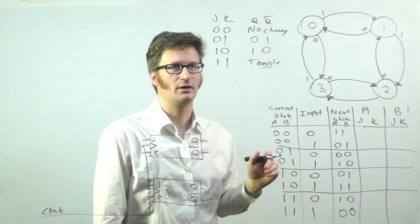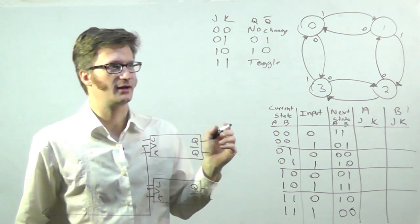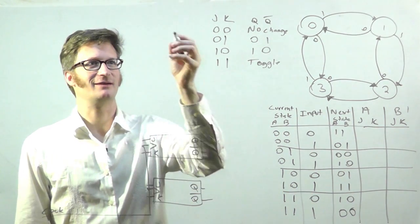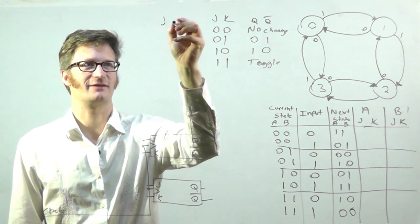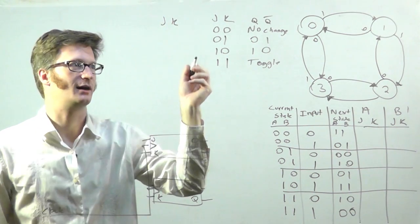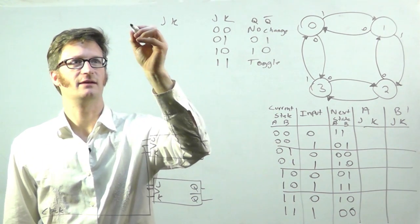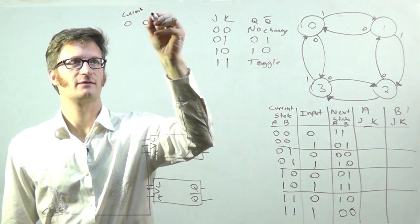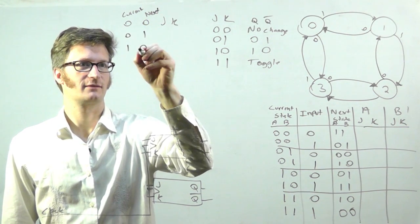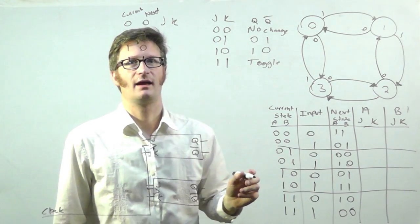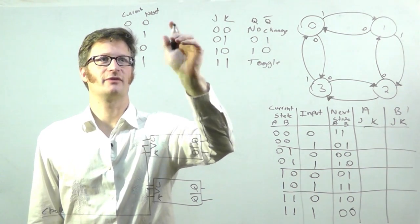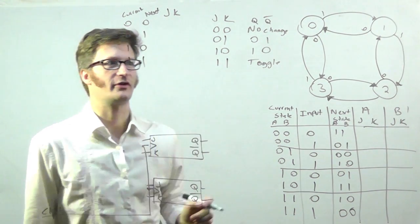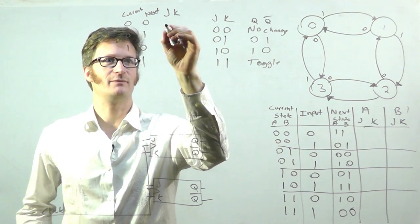There's one more thing that we have to do with the JK flip-flop, and that is we have to create another table that allows you to figure out what you need to have for each step. If my current value is a zero and my next is a zero, now you could say the value is zero and output is zero, so that's no change. So we could just say that J and K need to be zero and zero.